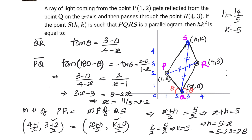To summarize, the two concepts used to solve this problem are: first, the diagonals of a parallelogram bisect each other; and second, since we have reflection, the slope of QR equals the negative of the slope of PQ. These two conditions helped us find the value of hk² = 70.